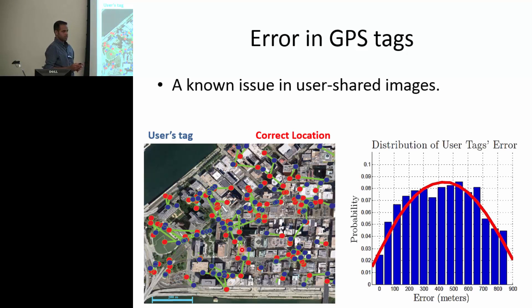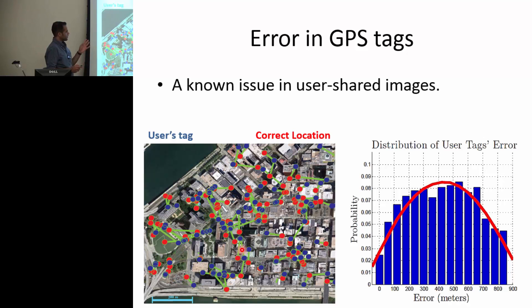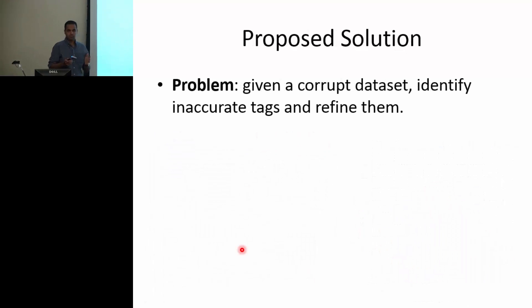We did a statistical study on about 8,000 images from Pittsburgh, and we found that about 30% of user-provided tags are incorrect. The plot on the right shows the inaccuracy in that 30%. The error is about 450 meters, which is pretty significant. In this paper, we propose a method for solving this problem: given a large dataset of images, we want to identify which subset have inaccurate GPS tags and fix them to the right location.